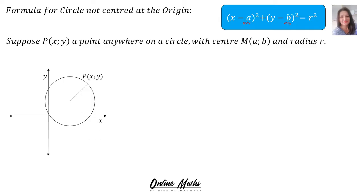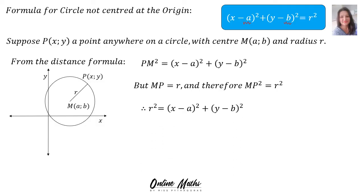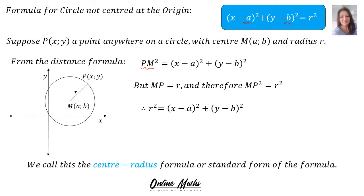Suppose P, the point (x, y), is a point anywhere on a circle with center M(a,b) and radius r. Then from the distance formula we can say that PM squared is equal to x minus a squared plus y minus b squared. But MP is equal to r, the radius, and therefore MP squared is equal to r squared. Therefore, in the place of PM squared we can substitute r squared, and there is your formula. We call this the center radius formula or standard form.